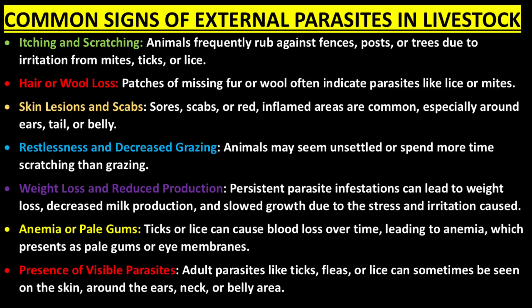Common signs of external parasites in livestock include: itching and scratching, where animals frequently rub against fences, posts, or trees due to irritation from mites, ticks, or lice; hair or wool loss, where patches of missing fur or wool often indicate parasites like lice or mites; skin lesions and scabs, where sores, scabs, or red inflamed areas are common, especially around ears, tail, or belly; restlessness and decreased grazing; weight loss and reduced production, as persistent parasite infestations can lead to weight loss, decreased milk production, and slowed growth; and anemia or pale gums, as ticks or lice can cause blood loss over time, presenting as pale gums or eye membranes. Adult parasites like ticks, fleas, or lice can sometimes be seen on the skin around the ears, neck, or belly area.